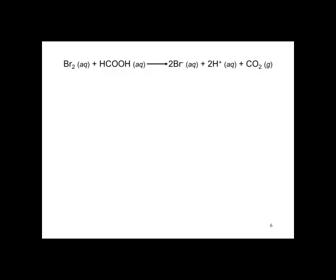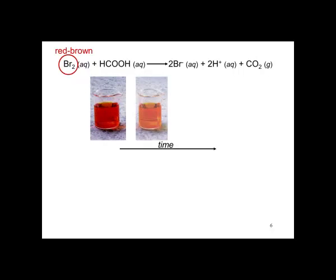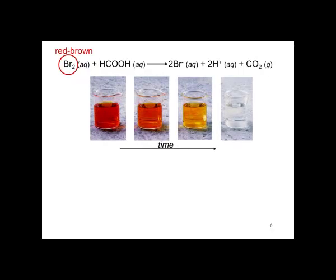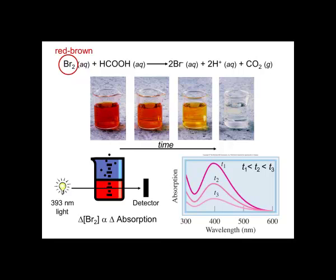Consider this reaction: the dissociation of bromine by formic acid. The Br2 is dissociated into bromide ion, hydrogen ion, and CO2 is generated. Bromine is a red-brown liquid. With time, the solution loses its color and becomes colorless. This can be measured conveniently by spectrophotometry, where a light source is passed through the solution and the detector measures the absorption. The change in concentration of bromine is directly proportional to the change in absorption.